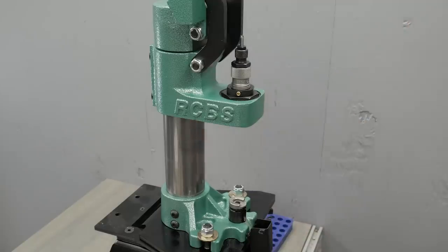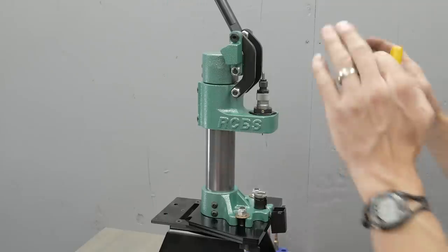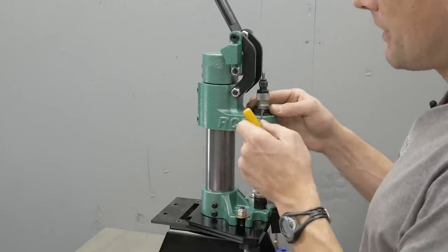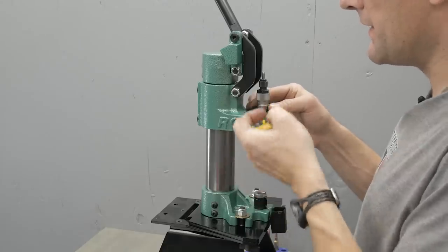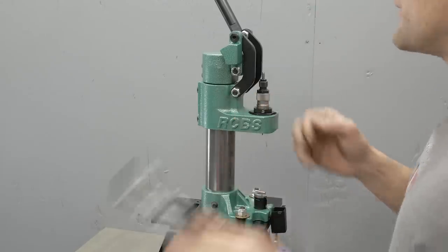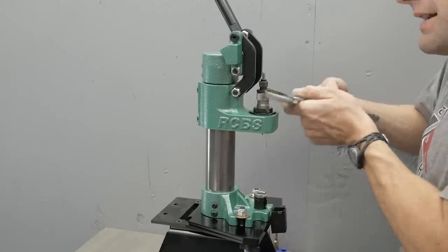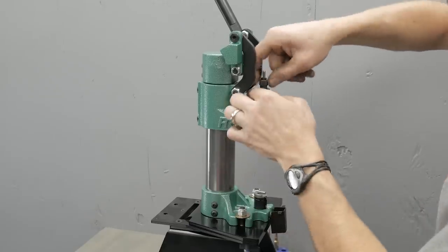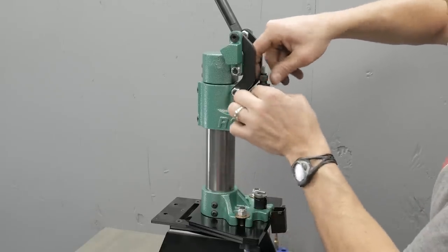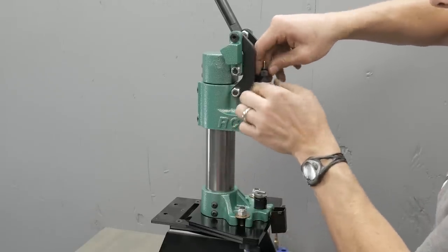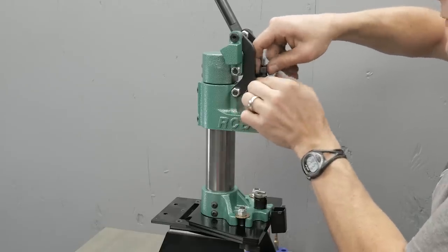Let's seat some bullets. So since we were good on the sizing die set up, I'm going to go ahead and tighten the set screw that's going to preserve that die depth setting. And we can just unscrew the die, get ready to screw in our gold metal window seeder.